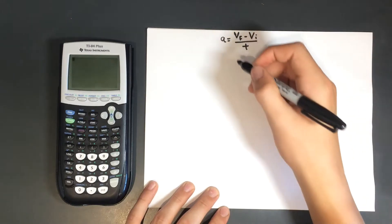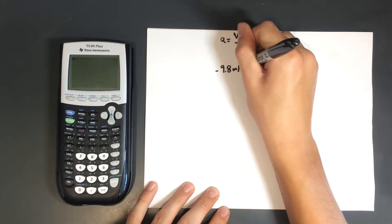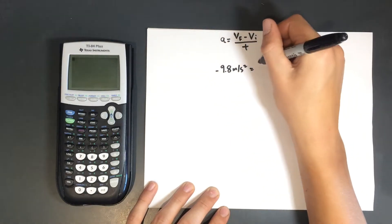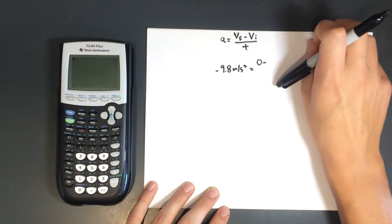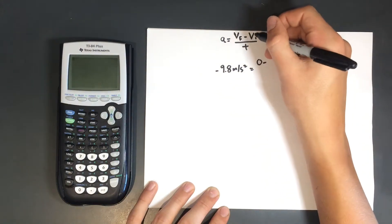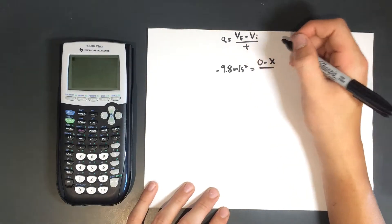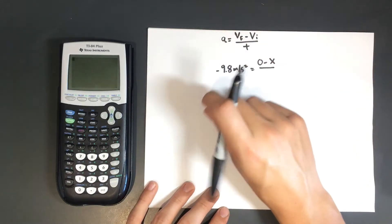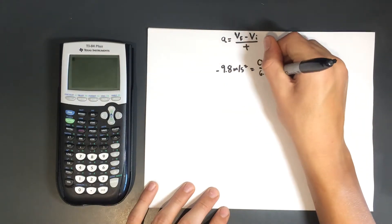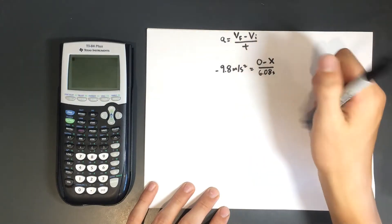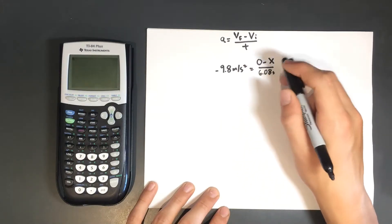So let's fill in what we know. The acceleration due to gravity is negative 9.8 meters per second squared. vf is going to be 0, because when the rocket reaches its max height it momentarily pauses before descending back to Earth. vi is just going to be x, because that's what we're solving for. And t is going to be 6.08 seconds, which is half of 12.15 seconds — the time to reach max height.